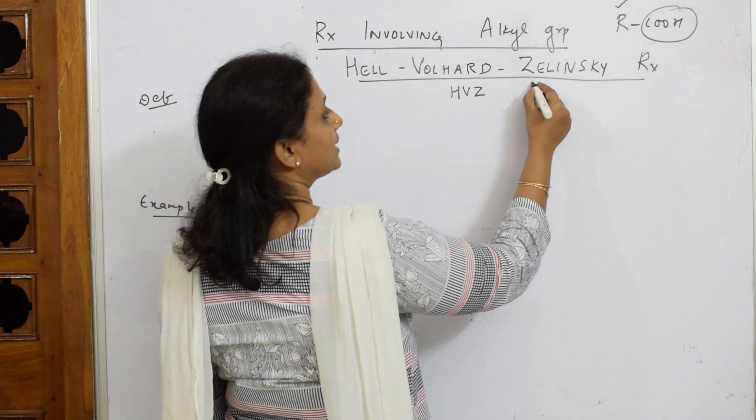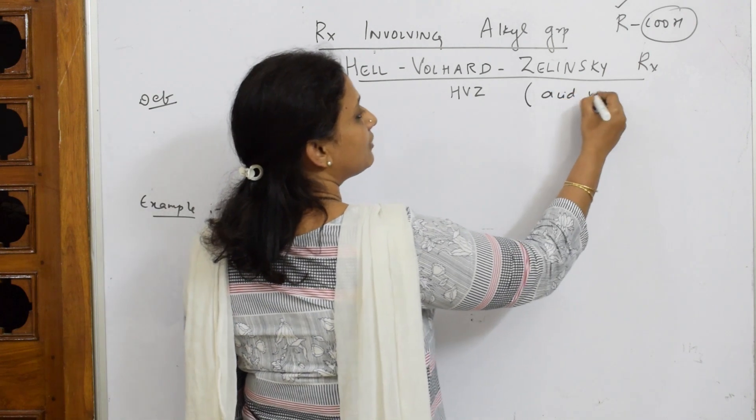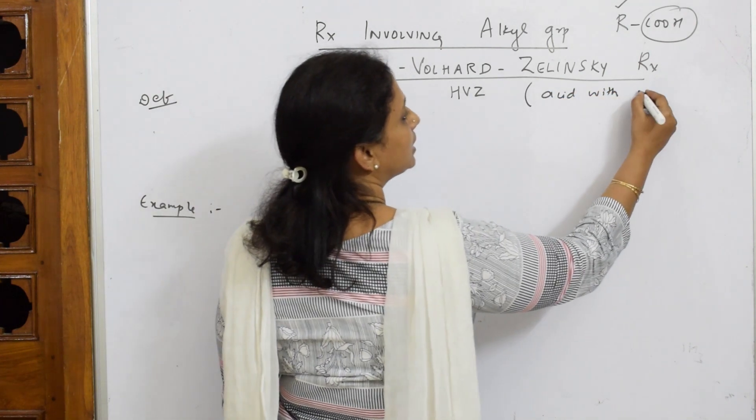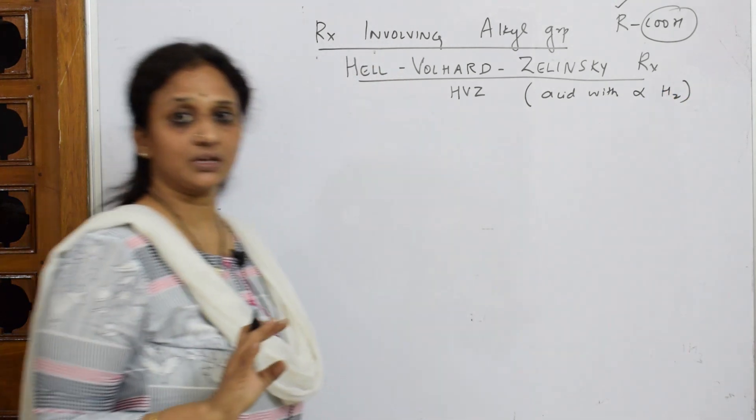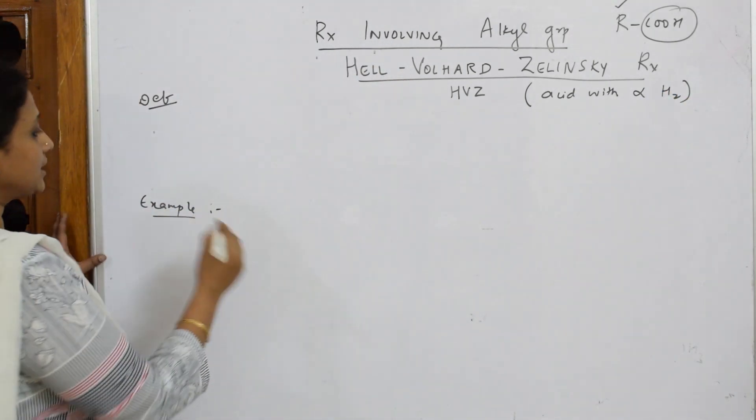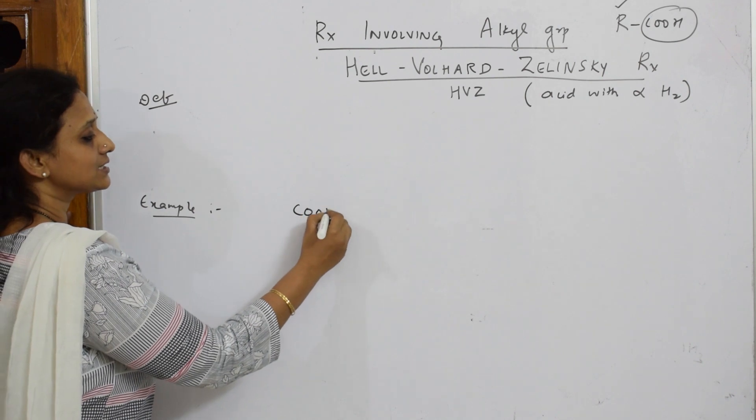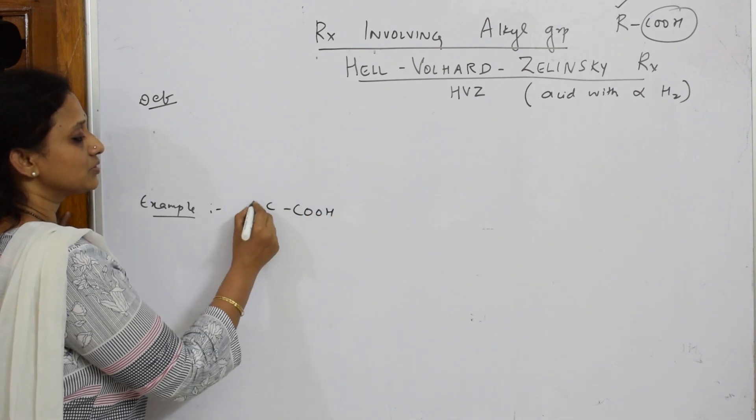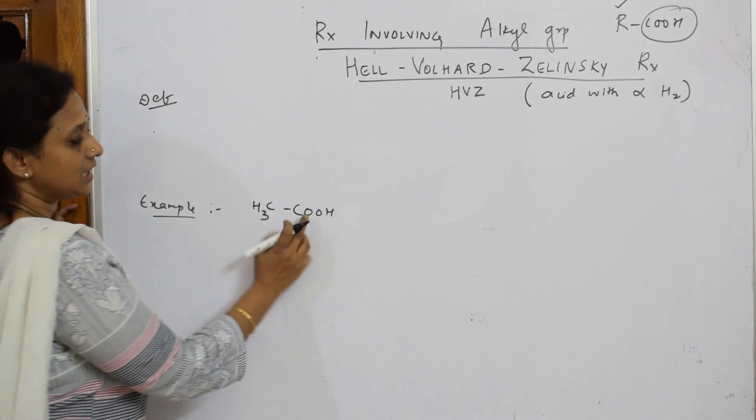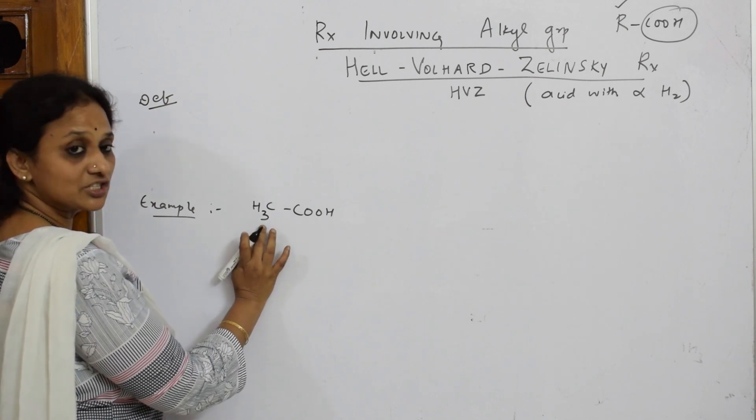The most important requirement for HVZ is you should require an acid with alpha hydrogen - with alpha hydrogen, this is the most important thing. So I already said what is alpha hydrogen.